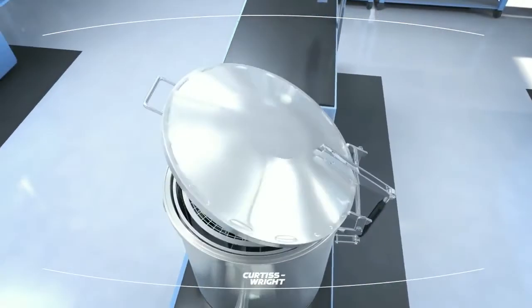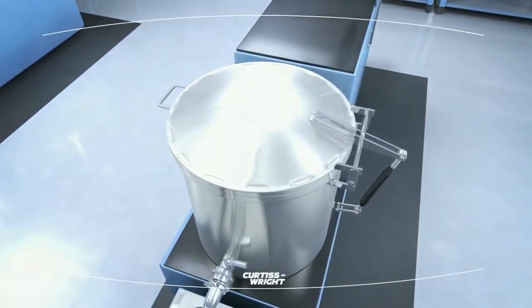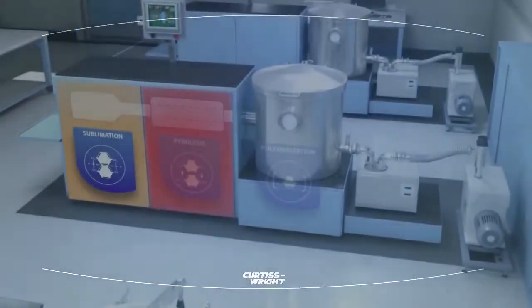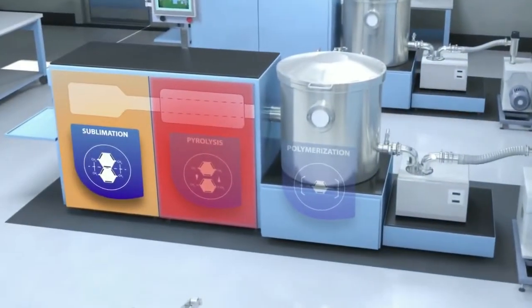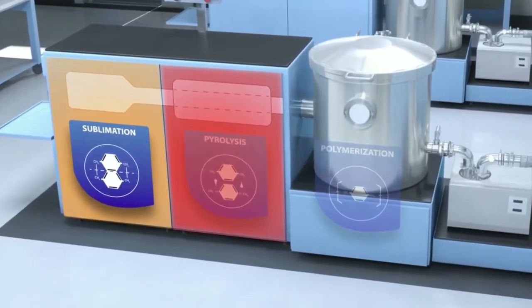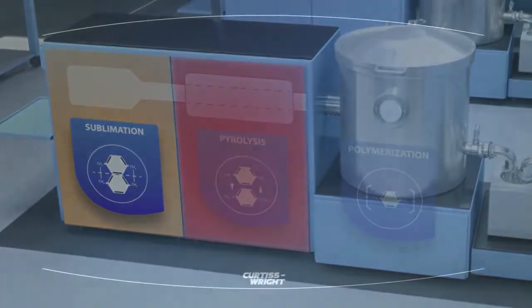We will now explore this unique three-stage process. The first stage in our coating process is the sublimation of diperexylene, or dimer.